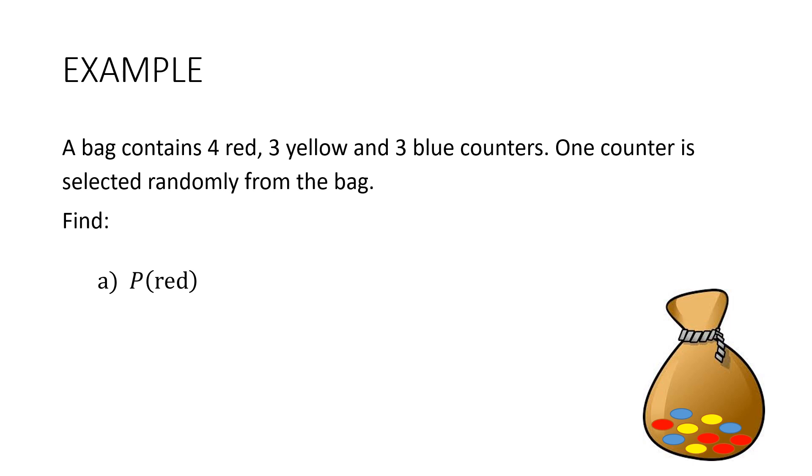How many possibilities are there? How many counters all together? Ten. So there's our probability, four on ten. We could reduce that down to two on five if we wanted to.